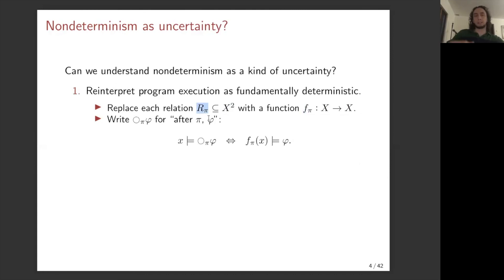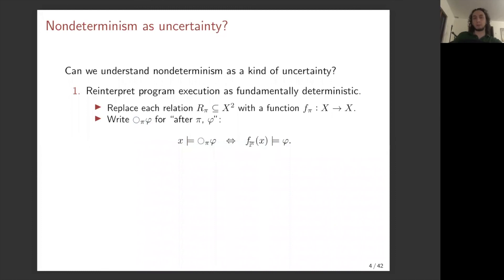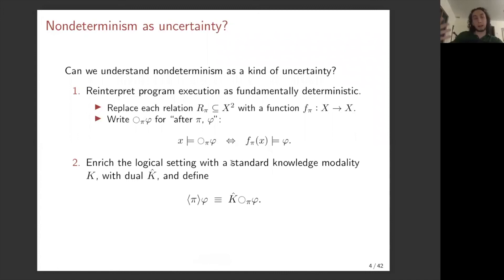So rather than there being multiple possible outcomes of a given program π, there's only ever one — we have a function instead of a relation. I'll use this notation: [after π]φ, interpreted in exactly the same way as before except now instead of looking at a relation we have a function, so there's a unique output of executing the program π in any given state. We check if that output is a φ-world. This makes it look something like a temporal logic.